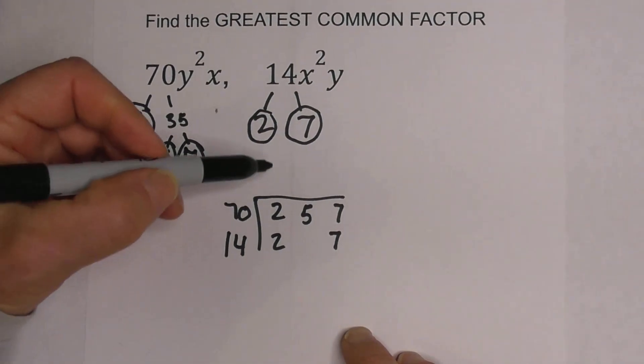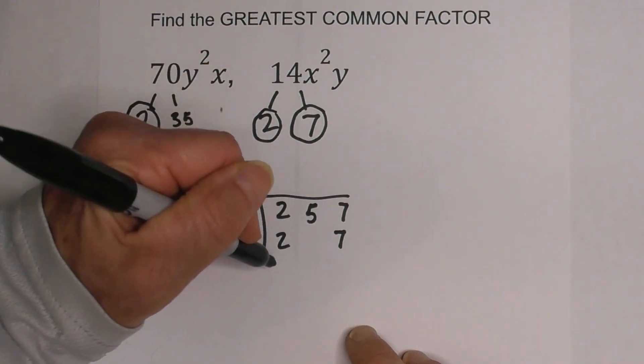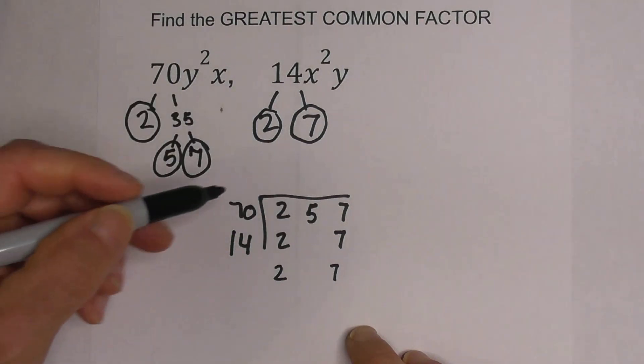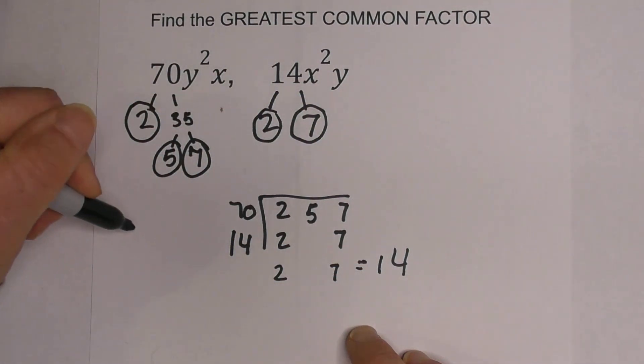Now what I do is I look for columns that have two numbers and I bring one number down. The 5 doesn't have another number, and then I multiply these together and that equals 14. So I have the GCF for 70 and 14.